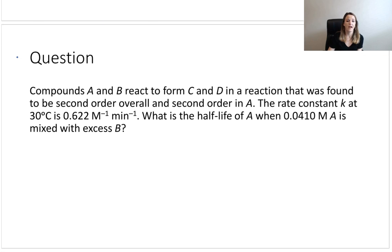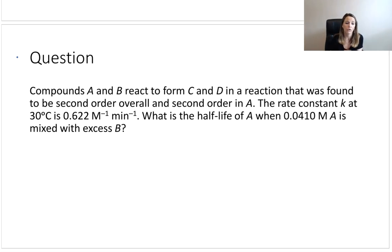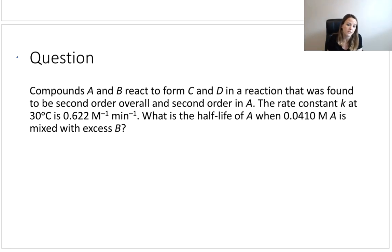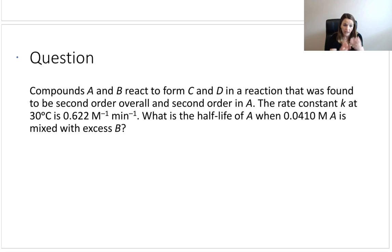I'll leave you with one last question. Compounds A and B react to form C and D in a reaction that was found to be second order overall and second order in A. The rate constant at 30 degrees Celsius is 0.622 inverse molar inverse minutes. What is the half-life of A when 0.041 molar of A is mixed with excess B? As a challenge, also write out the rate law given the information in the question.